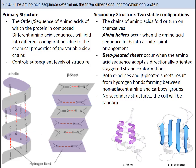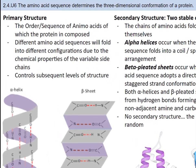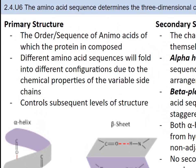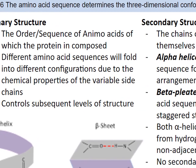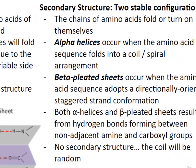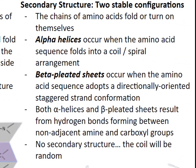Proteins can come in all shapes and sizes, and these macromolecules have four different levels of structure that you should know. The order that the amino acids are connected is very important. The order of the amino acid sequence is called the primary structure and determines the way the chain will fold. The different amino acid sequences will fold into different configurations due to the chemical properties of the variable side chains, a.k.a. the R group.